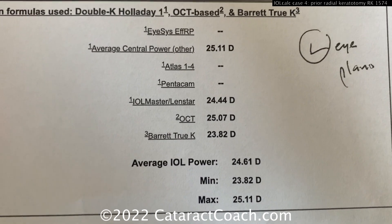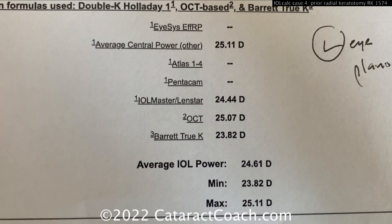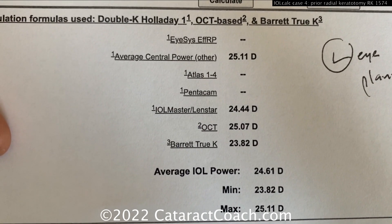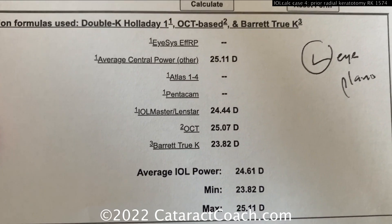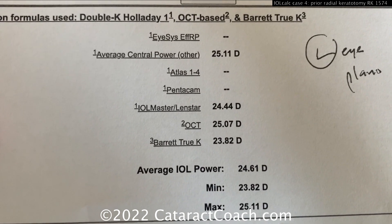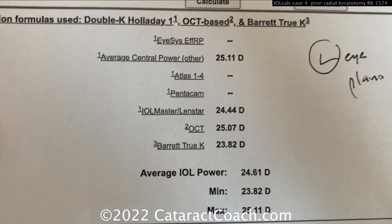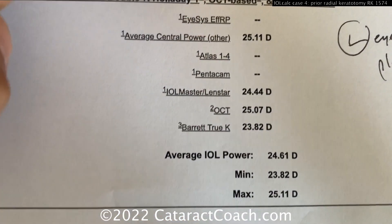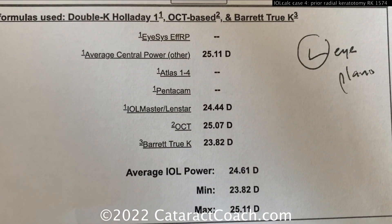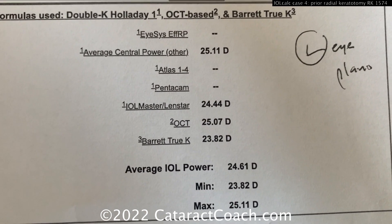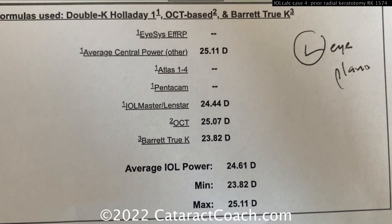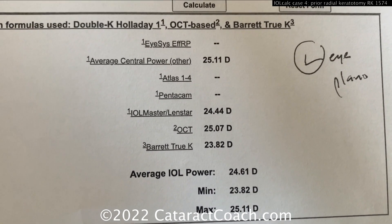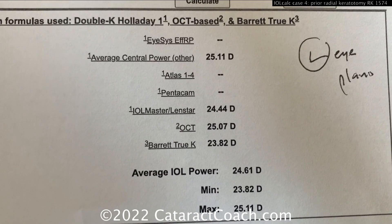What would I choose here? Well, RK is the gift that keeps on giving — meaning if you make the patient absolutely plano today, in a few years the patient will be a little hyperopic, maybe plus a half. So I'd rather the patient end up a little on the minus side if anything. Of these options, I wouldn't necessarily use the average of 24 and a half, but I'd probably put a 25-diopter lens in this eye. That's what we're going to do — surgery is scheduled soon. The 25-diopter lens is my goal for this patient to achieve a plano post-op result.